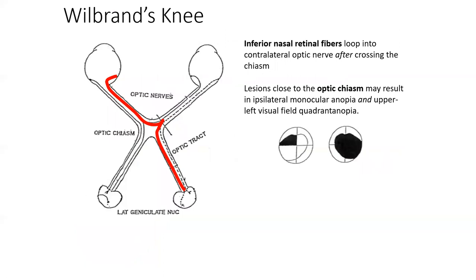One final thing to talk about regarding lesions is Wilbrand's knee. This is part of normal development, but essentially when the nasal retinal fibers go posteriorly through the optic chiasm and proceed on to the optic tract, some of the inferior nasal fibers that are crossing will tuck up into the contralateral optic nerve side for a moment. A lesion in that location will produce full vision loss to the affected side, but you'll also see an upper outer visual field quadrantanopia.